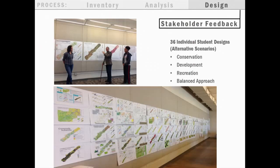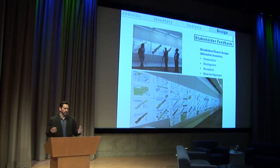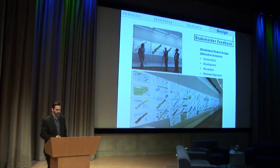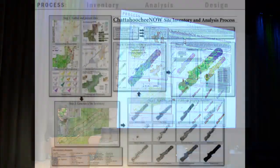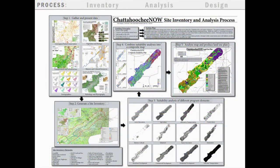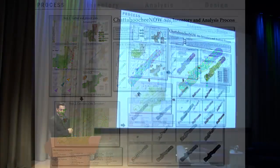We ended up with 36 different land use plans pinned along the studio wall. We presented these to stakeholders for feedback. Some students had a more conservation-oriented approach, some more development-oriented, some emphasized recreation, but most had a fairly balanced approach. We also had every student document their process — this was perhaps the most valuable part, because it really is all about the process. This was our highest priority learning objective: that students embraced and understood the value of this geodesign process.